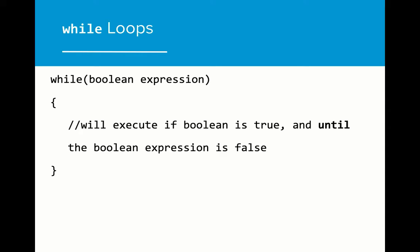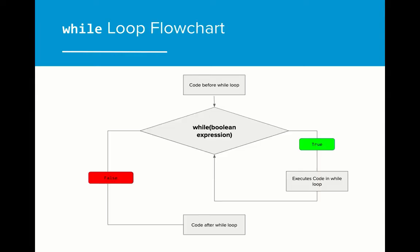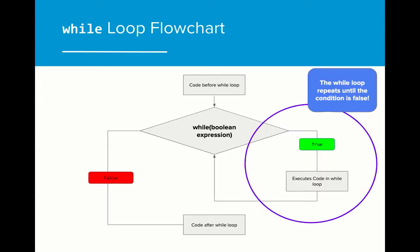The main difference is that once the code within the while loop is executed, the program returns to the boolean expression to re-evaluate the condition. If the expression is still true after a run through the while loop, the while loop will run again. If it becomes false, the while loop will stop. As indicated by the flowchart, the while loop will repeat itself until the condition is false. Only once the condition is false will any code that follows be executed.